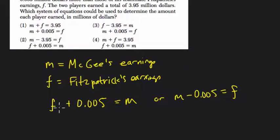Okay, so now we know if we take McGee's earnings and we take Fitzpatrick's earnings and we add them, we get $3.95 million. Which system of equations, a system of equations is a group of equations, could be used to determine the amount each player earned in millions of dollars?